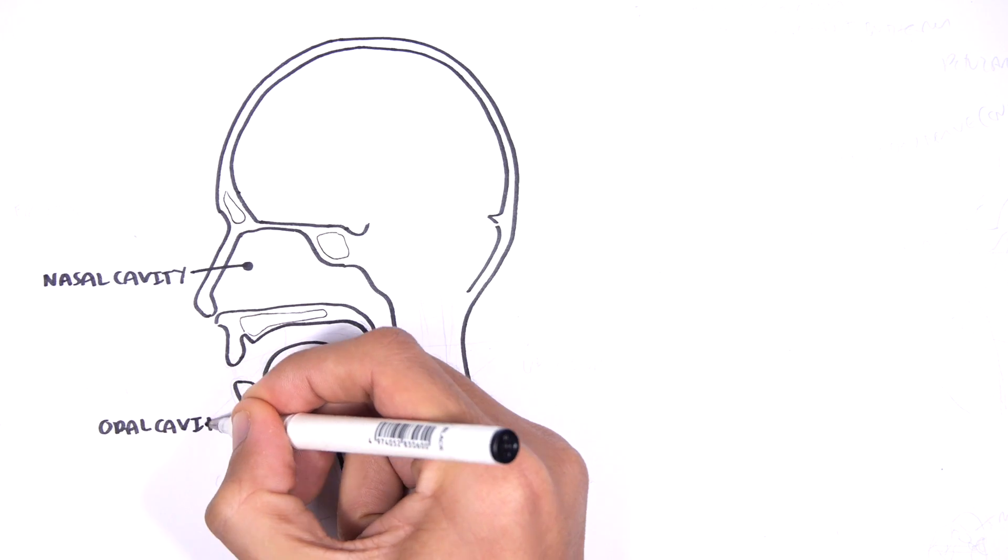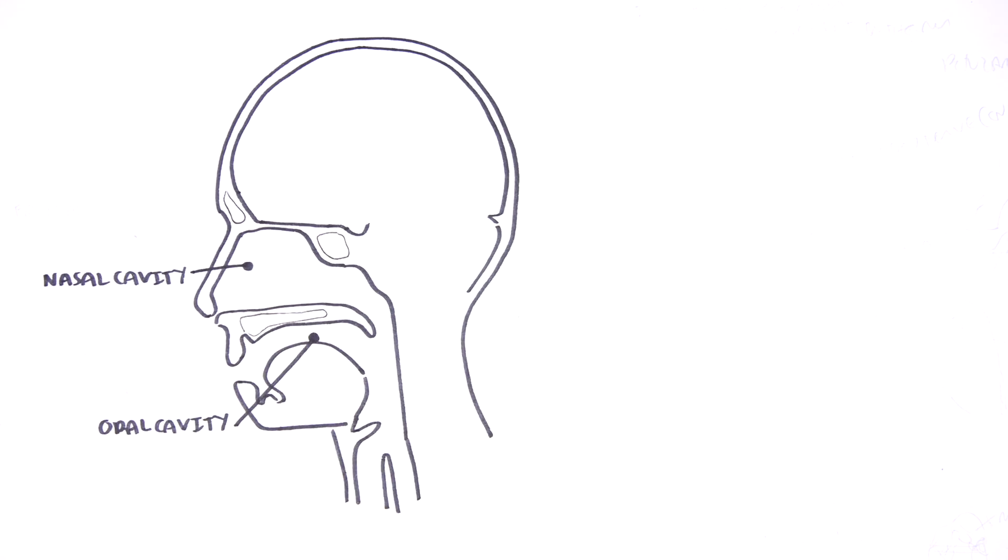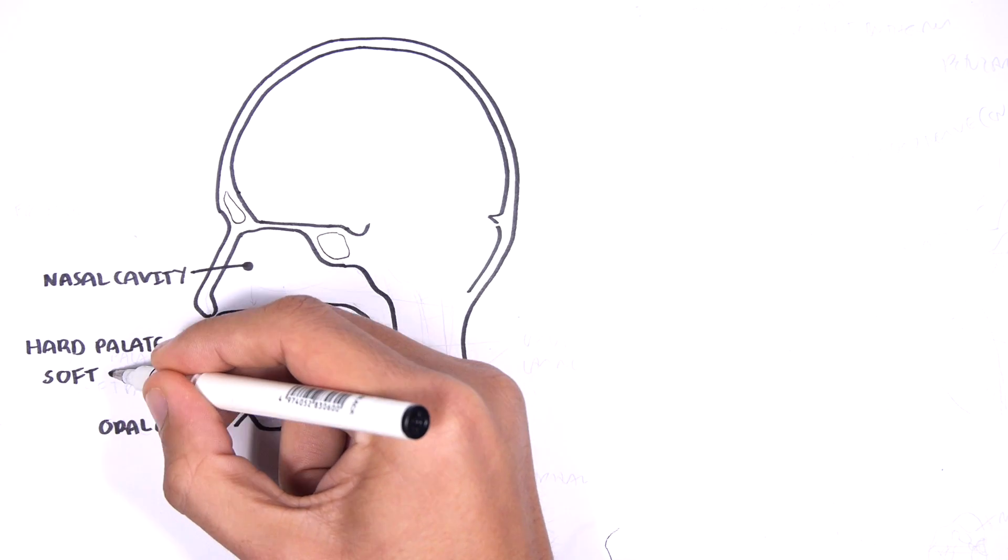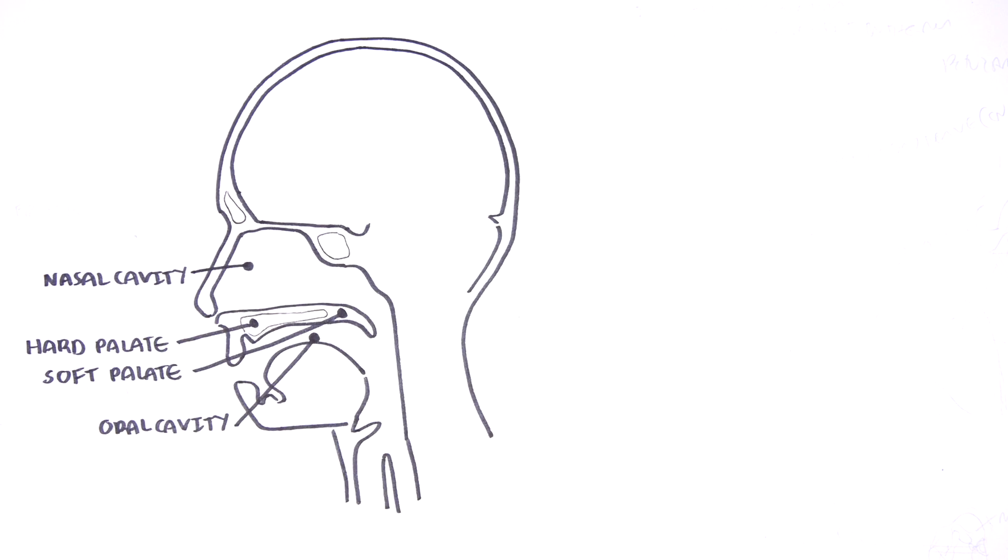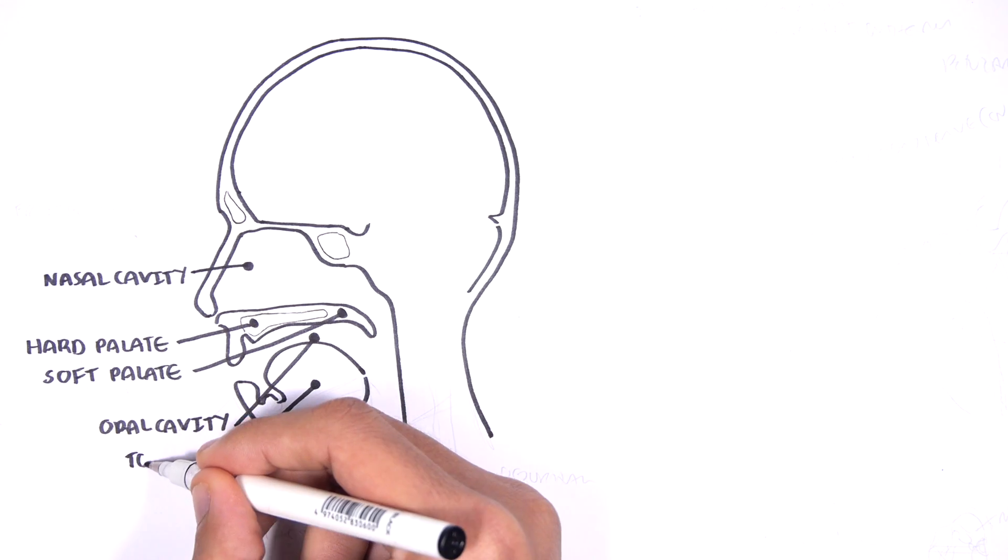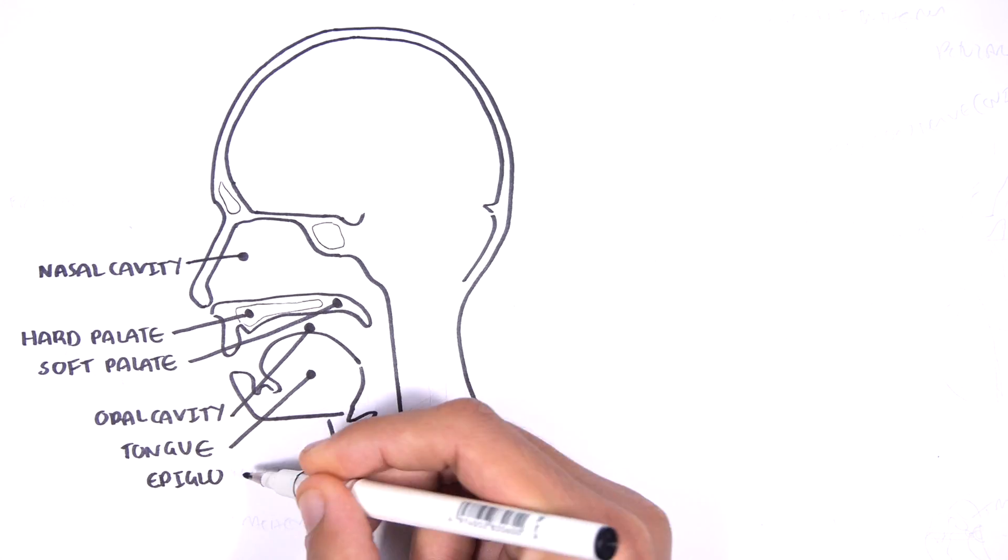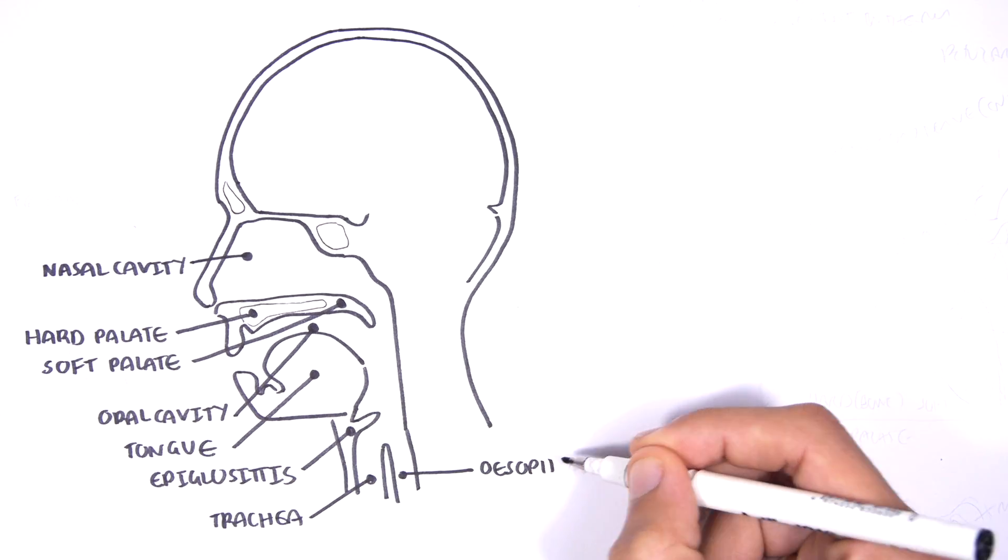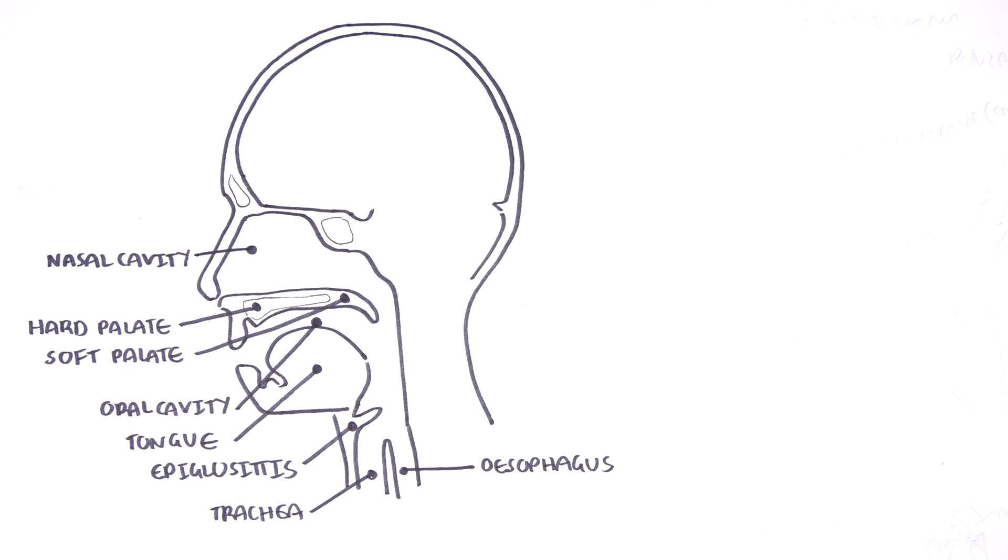Here is the nasal cavity. The nasal cavity is bordered inferiorly by the palate, which consists of a hard bony palate anteriorly and at the back the soft palate, which contains no bone. Of course you have the oral cavity here and the tongue here. The epiglottis is the gateway to the trachea, which connects to the lungs. The esophagus is the root to the stomach. The epiglottis closes when we swallow.